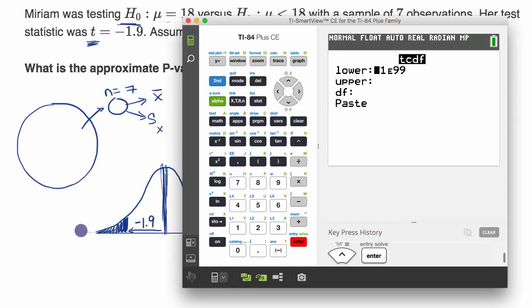And so my lower bound, I essentially want it to be negative infinity, so we can just call that negative infinity, an approximation of negative infinity, a very low number. Our upper bound would be negative 1.9. And then our degrees of freedom, that's our sample size minus one. Our sample size is seven, so our degrees of freedom would be six.